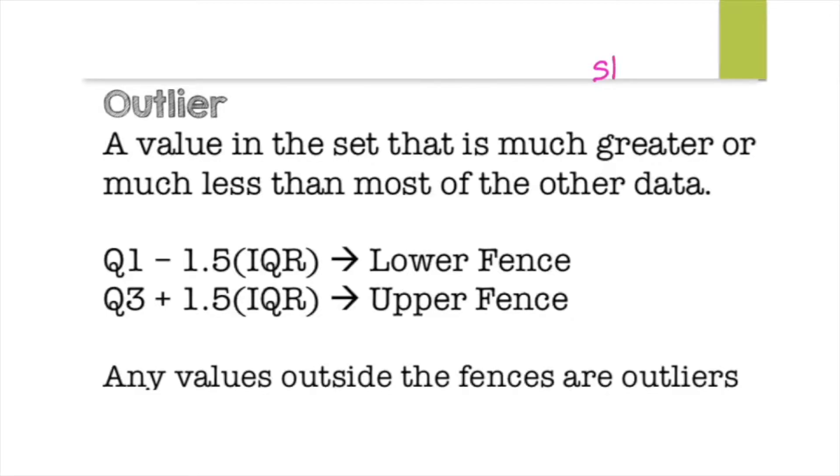So we don't like numbers to skew the data. Skewing the data actually means that it makes the data look like something that it's not. So if you have all A's and B's in a course, and out of like 10 grades you have A's and B's, and then your 11th grade you get an F, like a zero in your class,